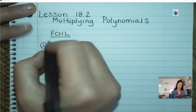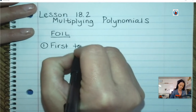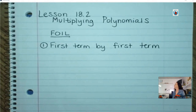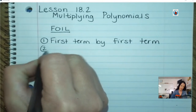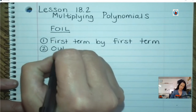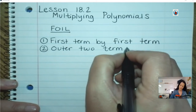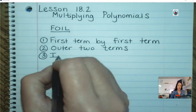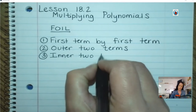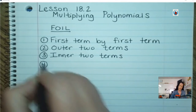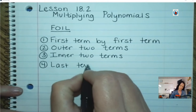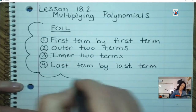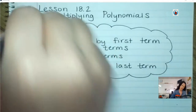Step one: the F — you're going to multiply the first term by the other first term. The O stands for the outer two terms. The I — you're going to multiply the inner two terms. And last, you multiply the last term by the other last term. If you go home tonight, tell your parents you did FOIL; they'll remember First, Outer, Inner, Last.